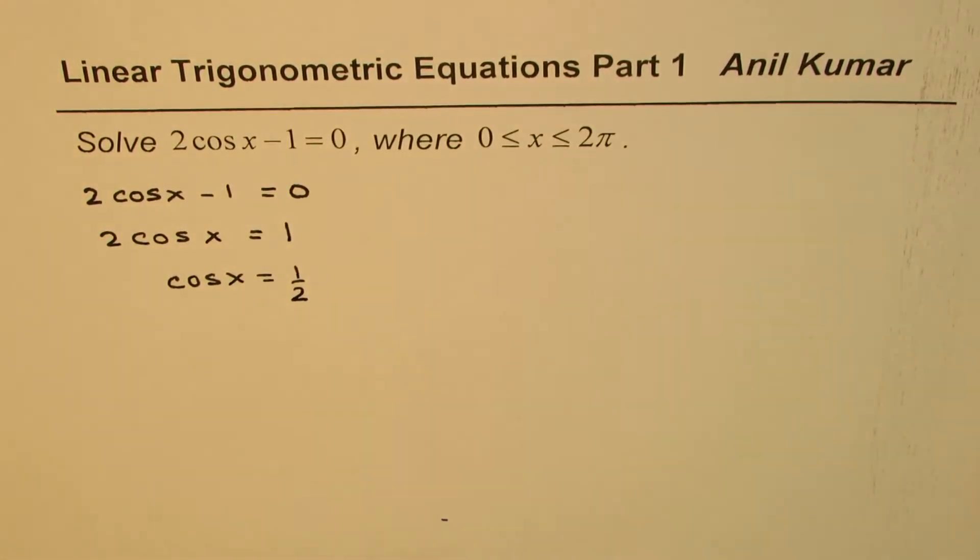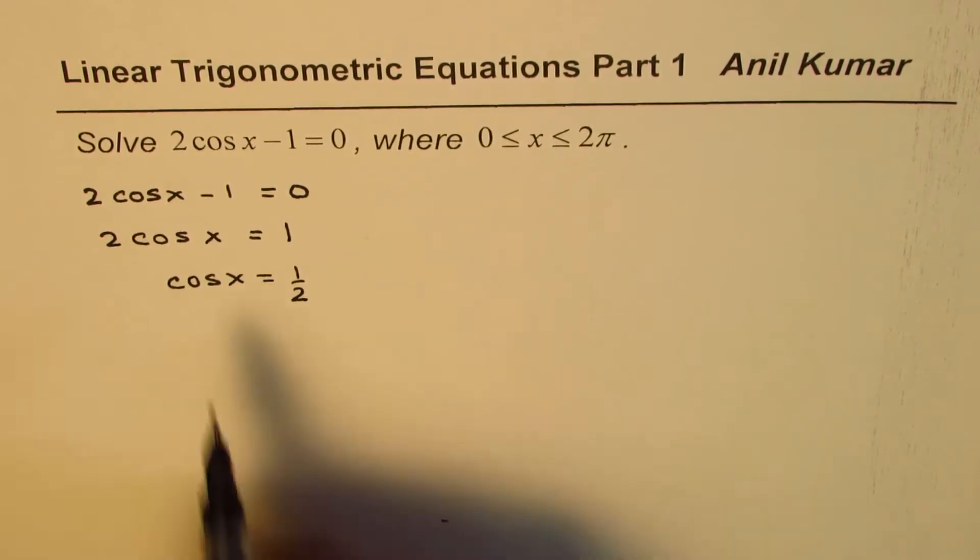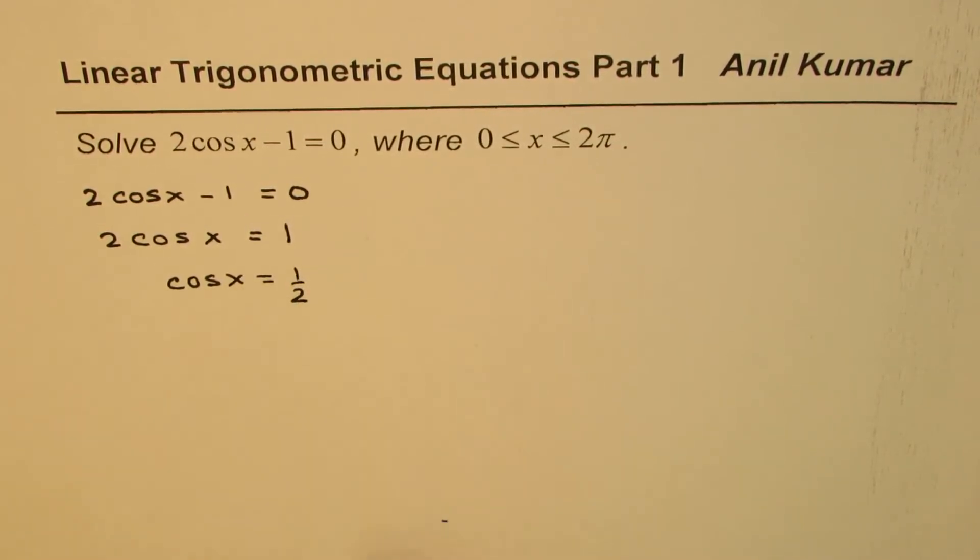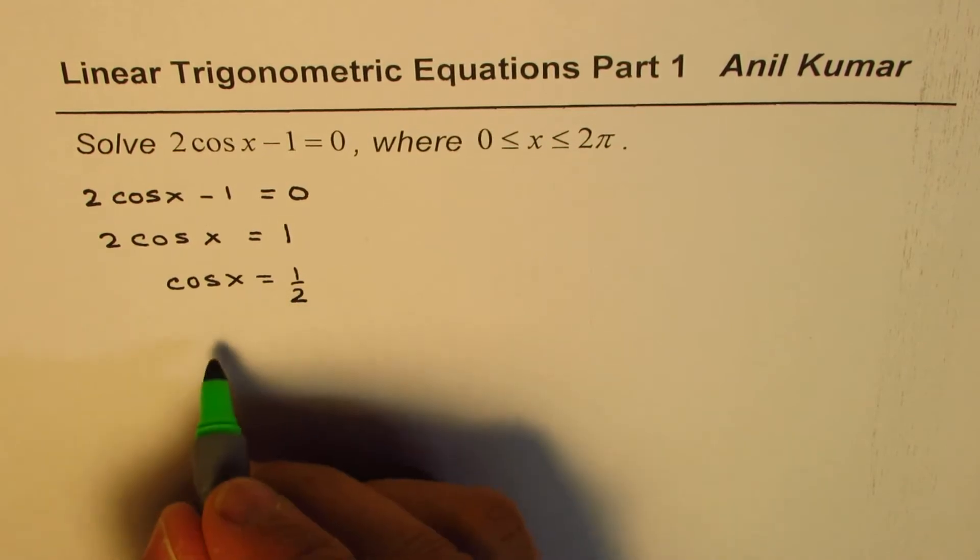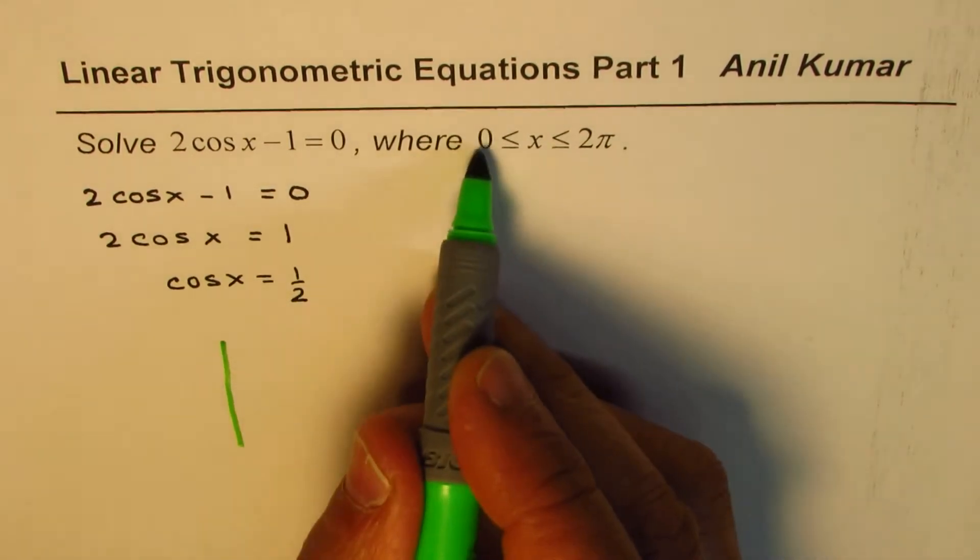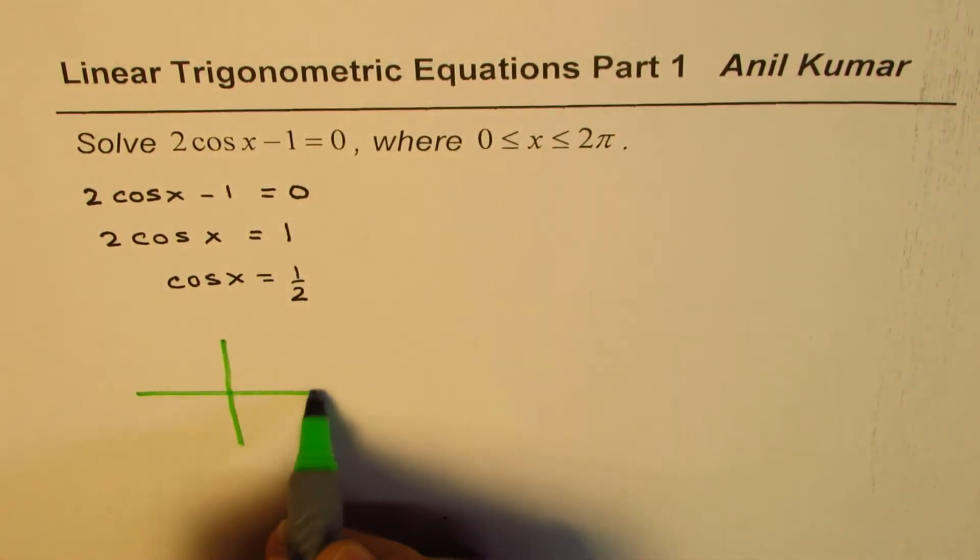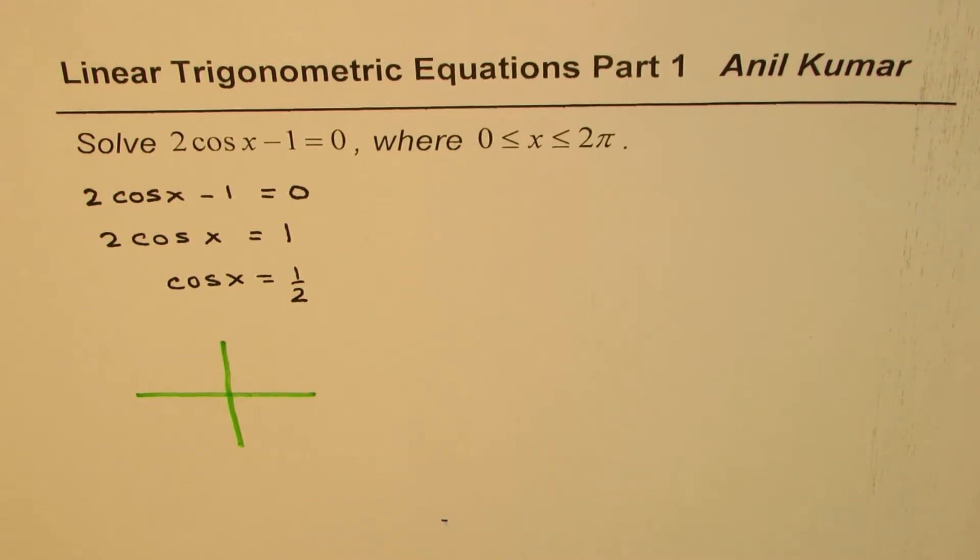So now we are looking for the value of x which will result in cos(x) being 1/2. Now cos(x) is positive. When is cos(x) positive? Within this interval of 0 to 2π, we can look into the CAST rule.